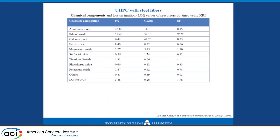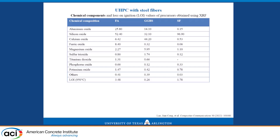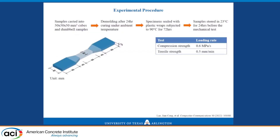First I want to talk about geopolymer made with steel fibers, as currently the most common UHPC uses steel fibers. What we have done is use Class F fly ash or slag and a small amount of silica fume. The composition is shown here. We used different amounts of fly ash — 80% fly ash with 20% slag, and then the other way around, 80% slag with 20% fly ash. Everything else was kept the same. Two kinds of tests were conducted: compressive strength, which is quite common, and uniaxial tensile tests.